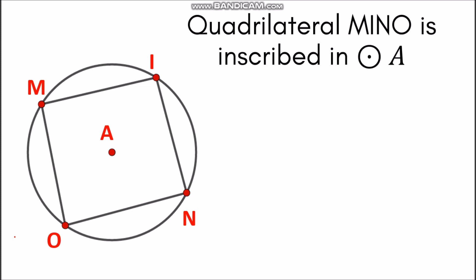Applying Theorem 100, the opposite angles of an inscribed quadrilateral are supplementary. Let's identify the opposite angles. First, we have angle MON, and the opposite angle of that is angle MIN. So we can say that angle MON and angle MIN are supplementary.